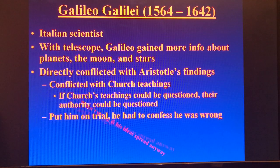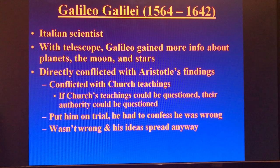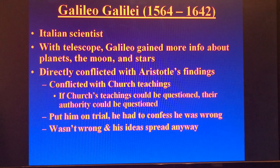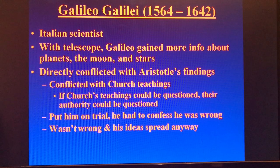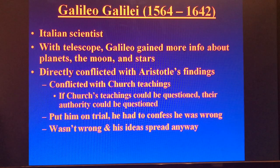Next is Galileo — full name Galileo Galilei — living from the mid-1500s into the early 1600s. One of the big things Galileo was famous for was his telescope, which is definitely something to emphasize. He didn't invent the first telescope, but he made a number of improvements on existing telescopes, so he's often credited with inventing the first good telescope. With it, he was able to observe and gain more information about the planets, the moon, the stars, and how they moved in their orbits.